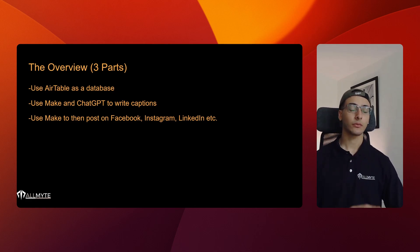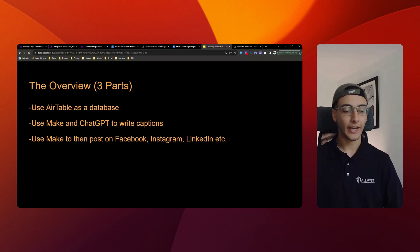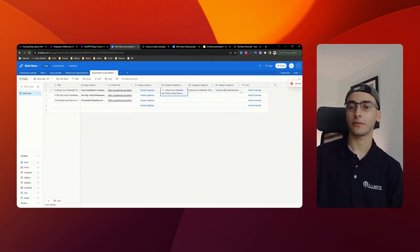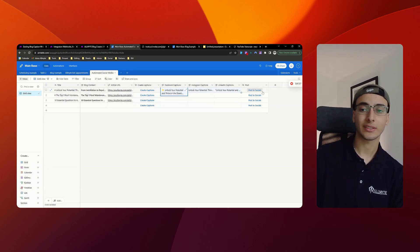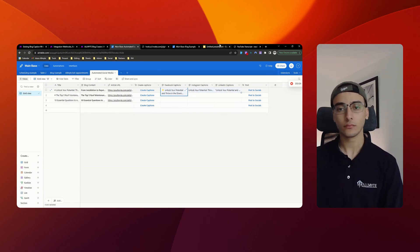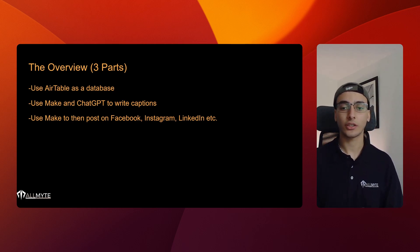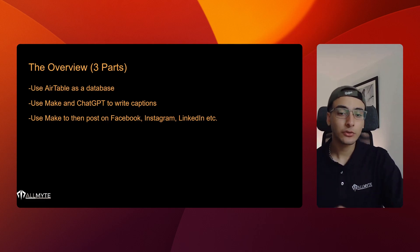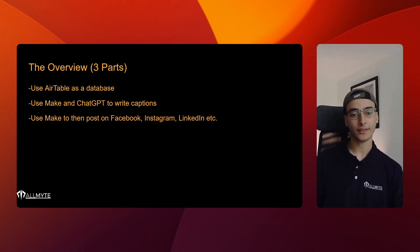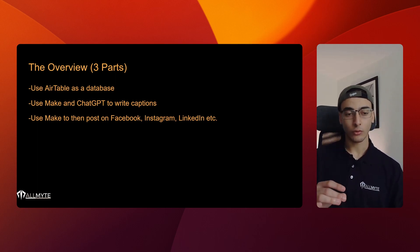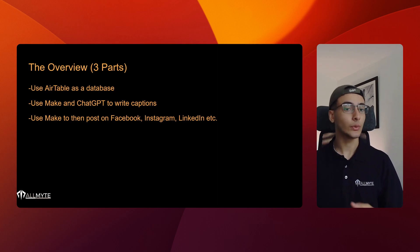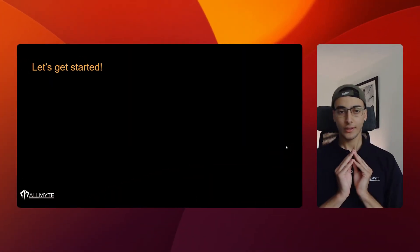Now let's actually go ahead and dive into building this system. There are going to be two main parts. The first is Airtable, which stores all your data — you'll have a title, blog content, article URL, a 'Create Captions' button, and a 'Post to Socials' button. The second part is using ChatGPT combined with Make to read the article and write captions, taking into consideration the different languages of different platforms, because the way you write on LinkedIn is not the same as Facebook or Instagram.